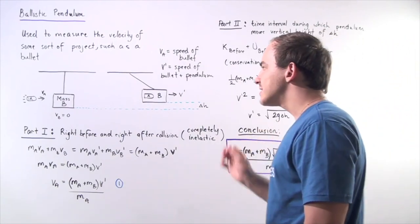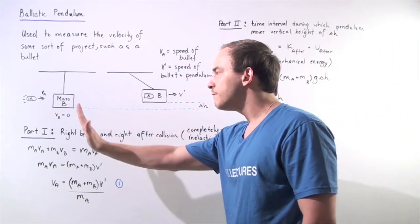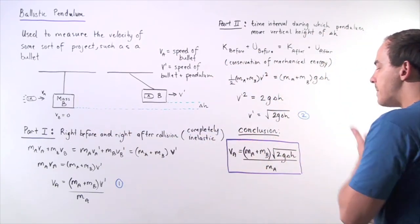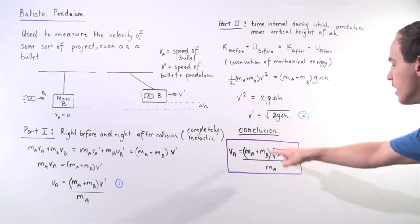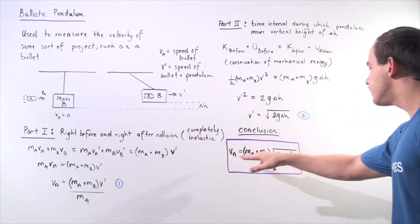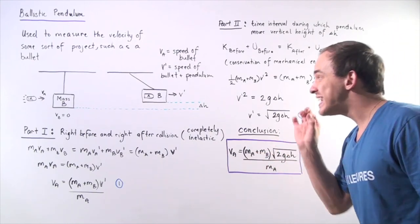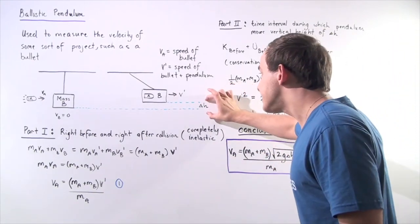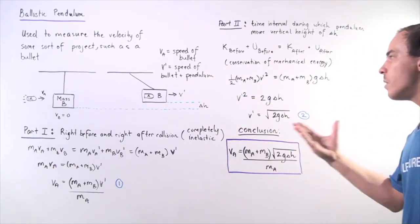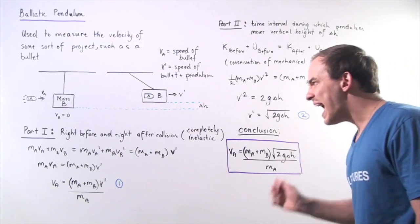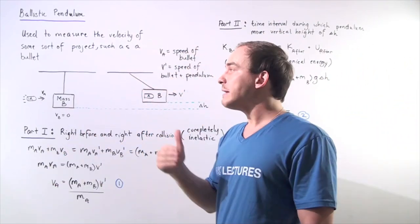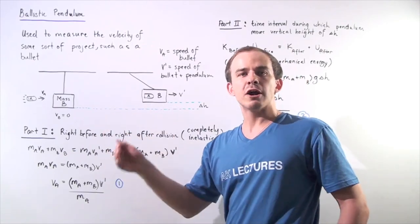This gives us our final result: the initial velocity of the bullet right before it collides equals the sum of our two masses multiplied by the square root of two times g times change in height, all divided by ma. So if we know this vertical displacement and we know the masses of both objects, we can calculate the velocity of our bullet — our projectile — right before it collides with the block.